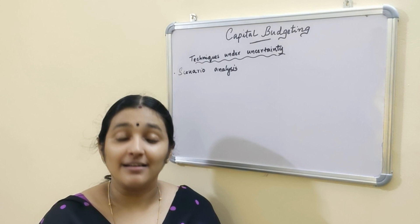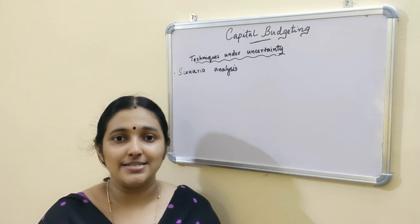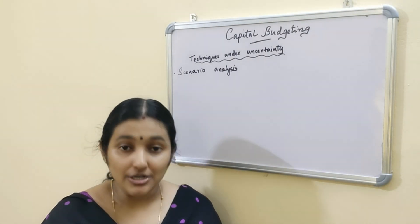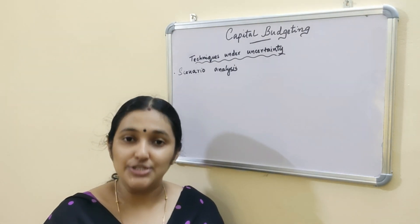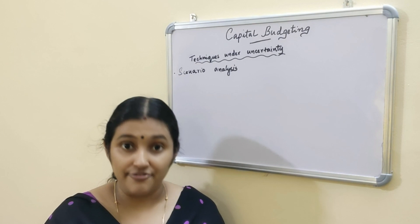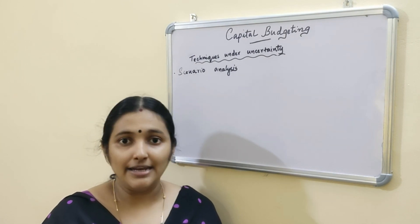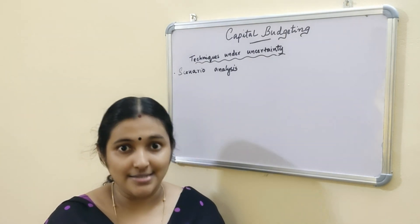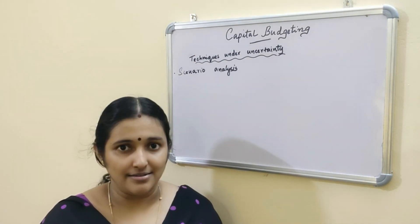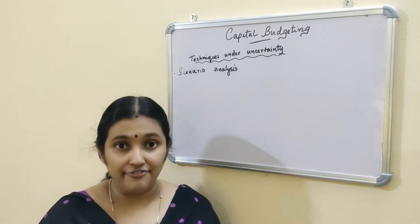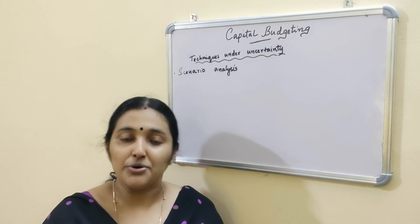The next technique under uncertainty is Scenario Analysis. It is an extension of Sensitivity Analysis and is useful when more than one variable changes at a time. It analyzes the combined effect of changes in variables on the outcome of the project. First, the most likely values are considered, then the worst case scenario, and then the best case scenario. Finally, we evaluate the effect on NPV or IRR.